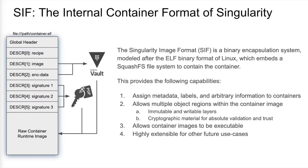We started off by modeling SIF after ELF, the binary executable format on Linux, and then we built upon it further to account for container-specific needs. The format starts with a global header where things like the UUID, container name, and global metadata are stored. Then there's a linked list of descriptors, which have pointers to the underlying object and data blobs within the file. Also, this file is executable, so you can put this entire container into the user's path and run it like any other program. You can control what happens when this file is run using the run script scriptlet, which I will show you shortly.